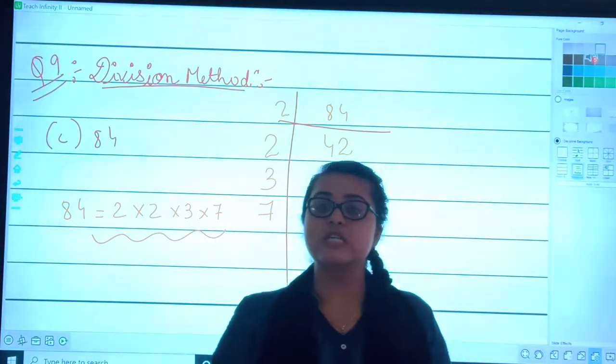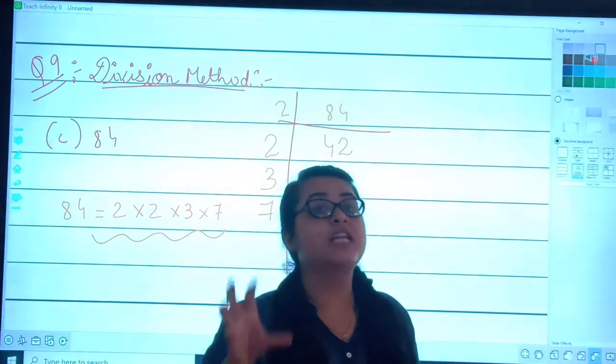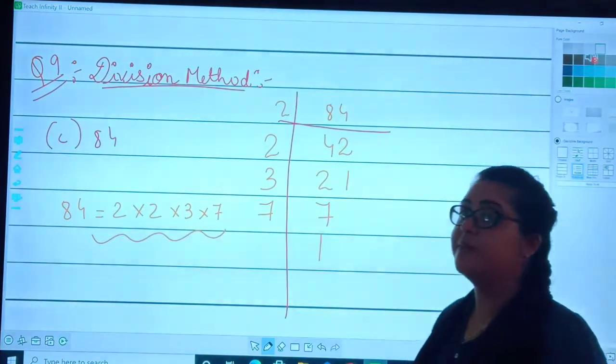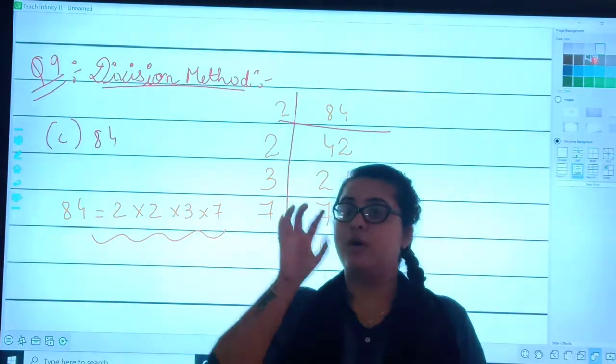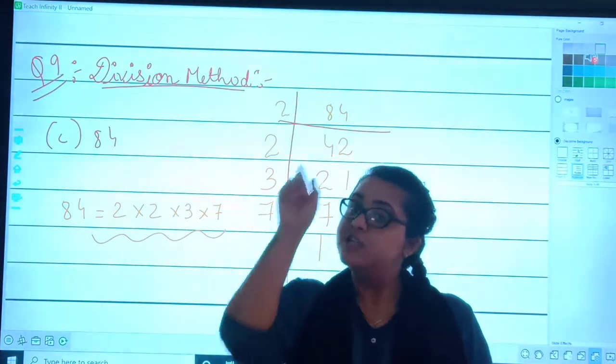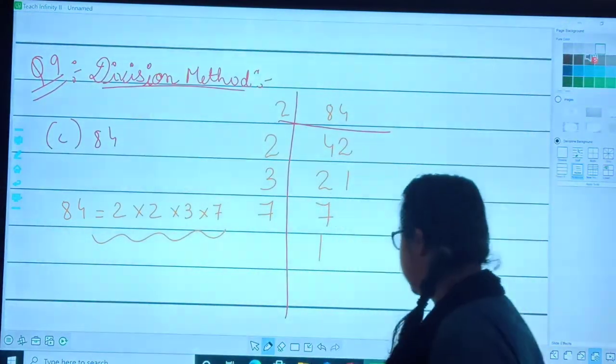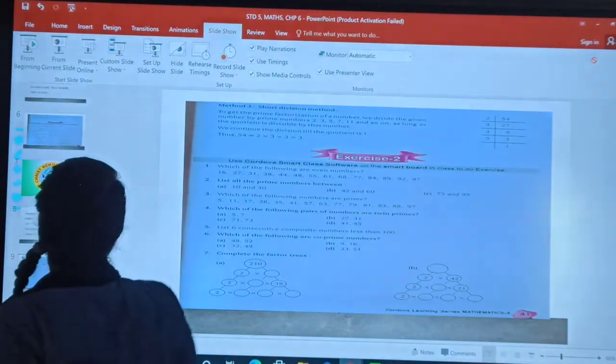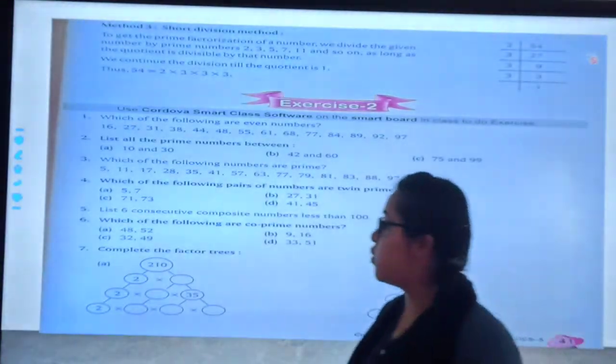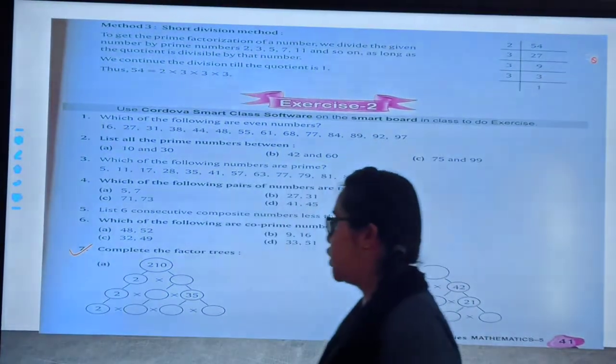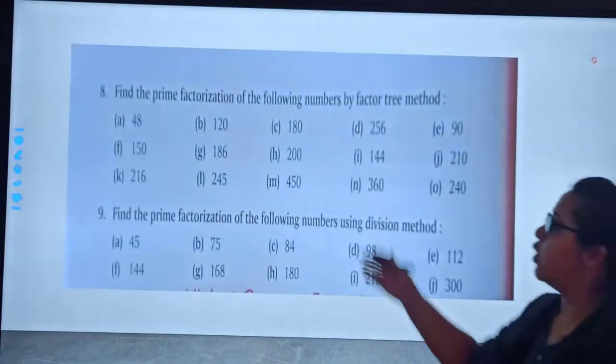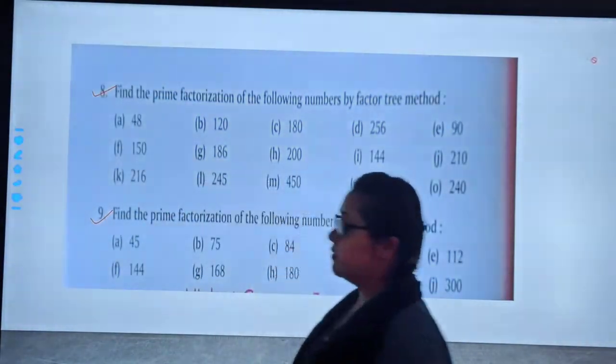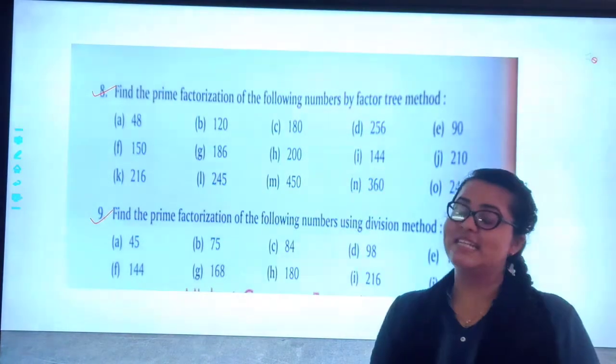So students, here we complete the discussion of exercise 2. The main topic of exercise 2 was prime factors. We discussed 3 methods: Factor tree method, statement method, and the third was short division method. So here is your worksheet.